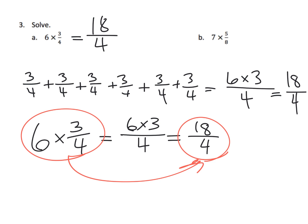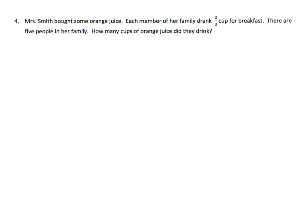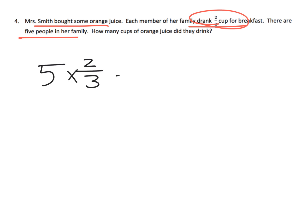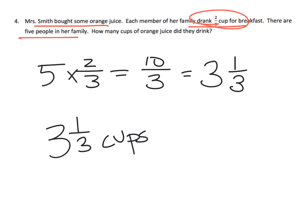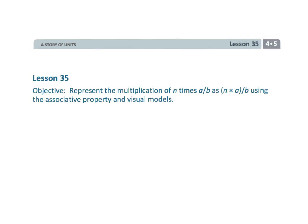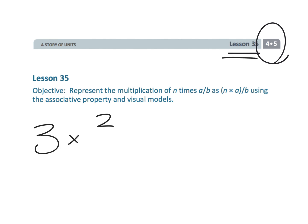Here's a word problem: Mrs. Smith bought some orange juice. Each member of her family drank two-thirds of a cup. There are five people in her family — how many cups did they drink? Five times two-thirds, of course, is ten-thirds. We should convert that to a mixed number: they drank three and one-third cups of juice. That wraps up fourth grade Module 5 Lesson 35, where students learn problems like this and get answers like six-fifths.